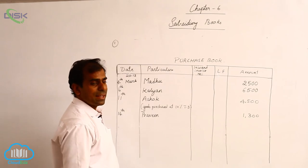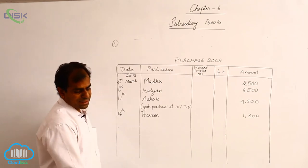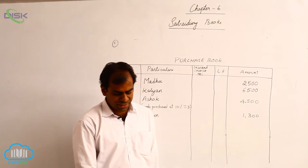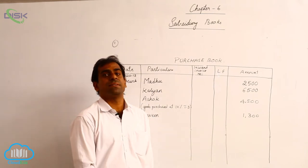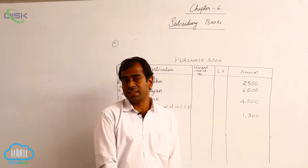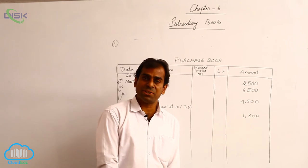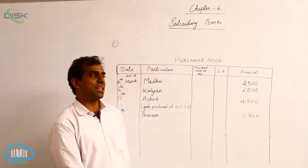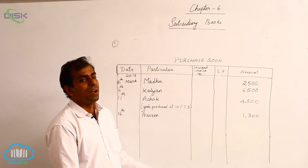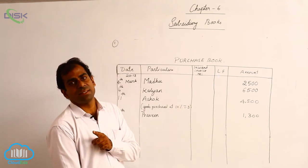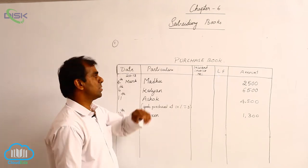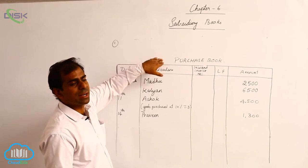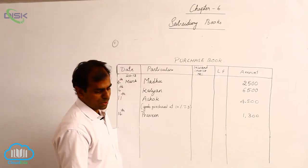Next, on 17th it simply states 'purchases'. When nothing else is stated, purchases means cash purchases — we purchased goods for cash. So purchased goods for cash is a cash transaction, and we don't enter it in the purchases book; rather we enter it in the cash book.